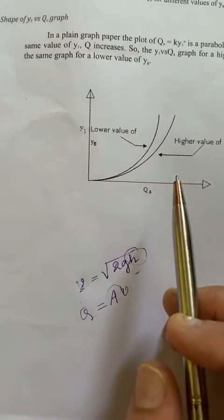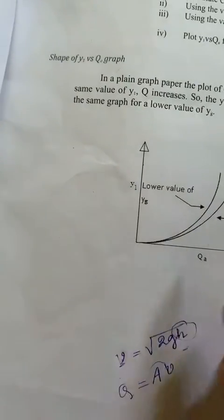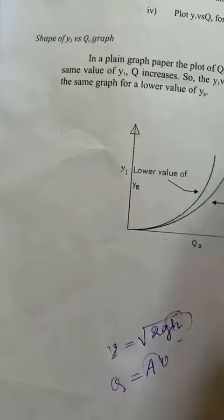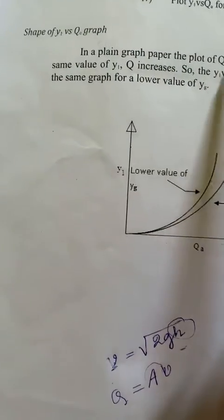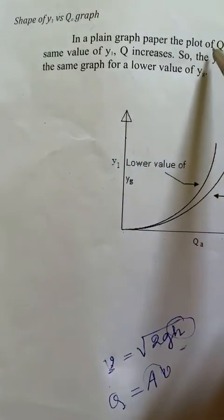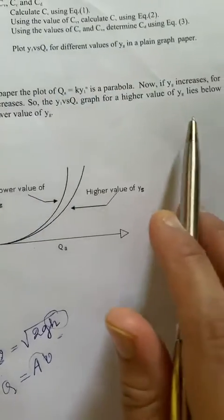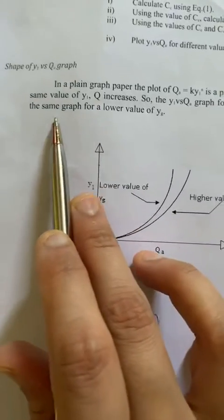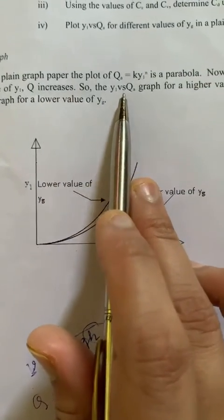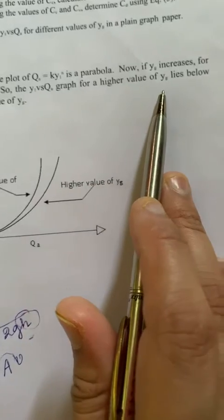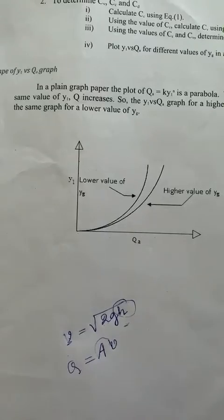Now we have to make the graph of depth of water versus actual discharge. On plain graph paper, we have to plot a graph of the equation qa equal to k·y1, which is a parabola. Now, if y2 increases for the same value of y1, q increases. So the y1 versus qa graph for a higher value of y2 lies below the same graph for a lower value of y2.